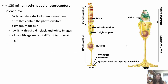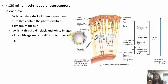We have about 120 million rod-shaped receptors in each eye, each containing a stack of membrane-bound discs with rhodopsin, a photosensitive pigment. The low light threshold of rods lets us see black and white images. We lose these as we get older, which makes it more difficult to drive at night. The signal passes from the pigmented layer through the rods and cones to horizontal cells, bipolar cells, and then ganglion cells, exiting out the back of the eyeball via the optic nerve.